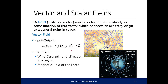In a vector field, at any point in space we can have a vector originating from that point. For example, this pattern could be a wind pattern. The wind originates from one point with a certain vector defining its direction. At other points, the wind also has a certain direction — each point in space has its own vector value.